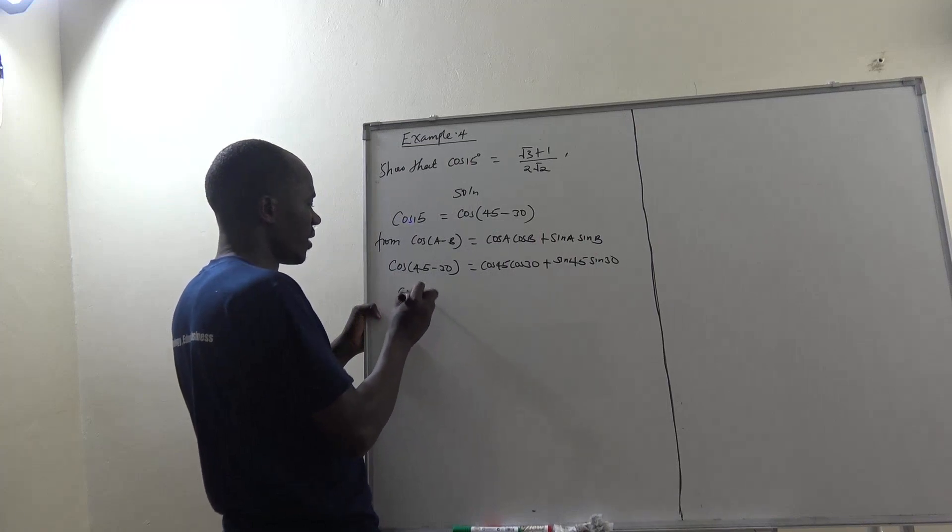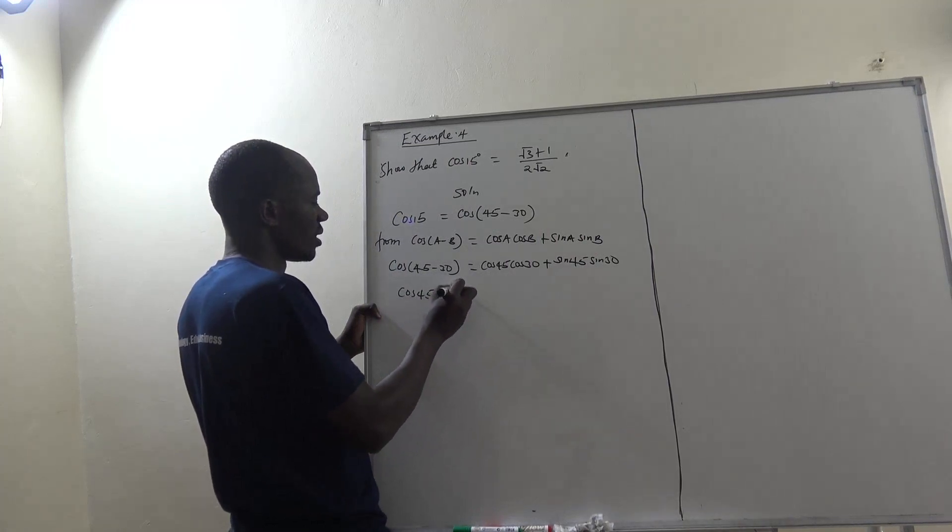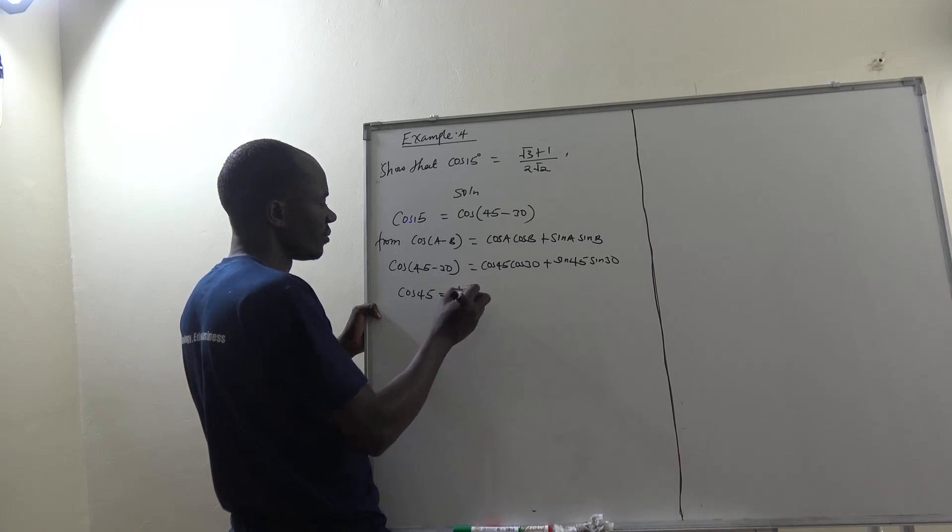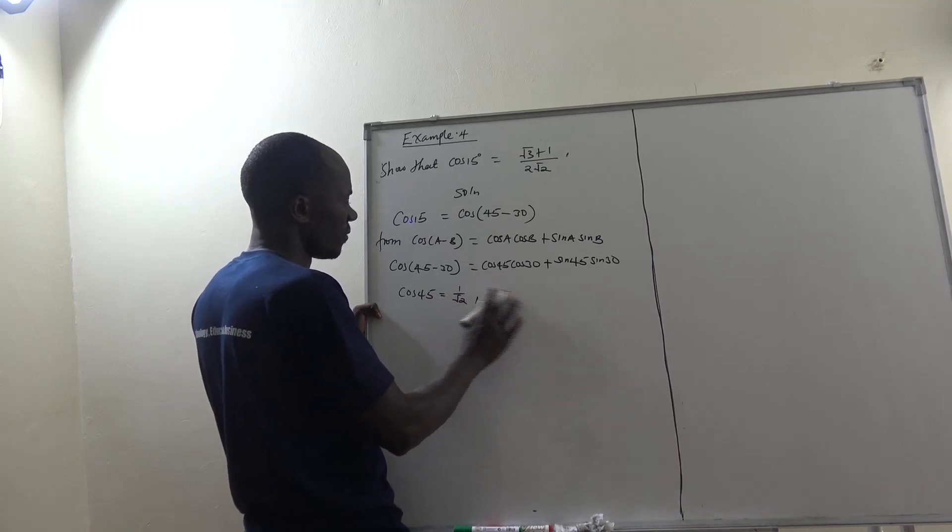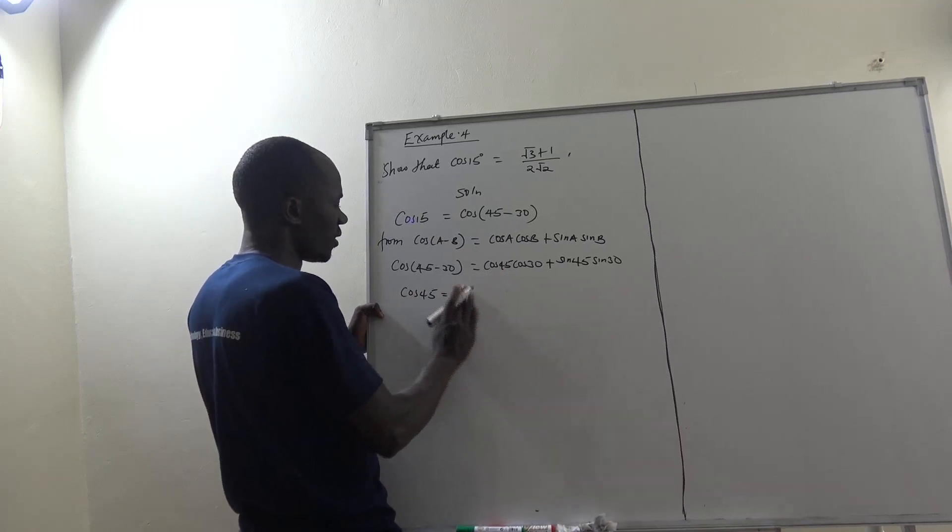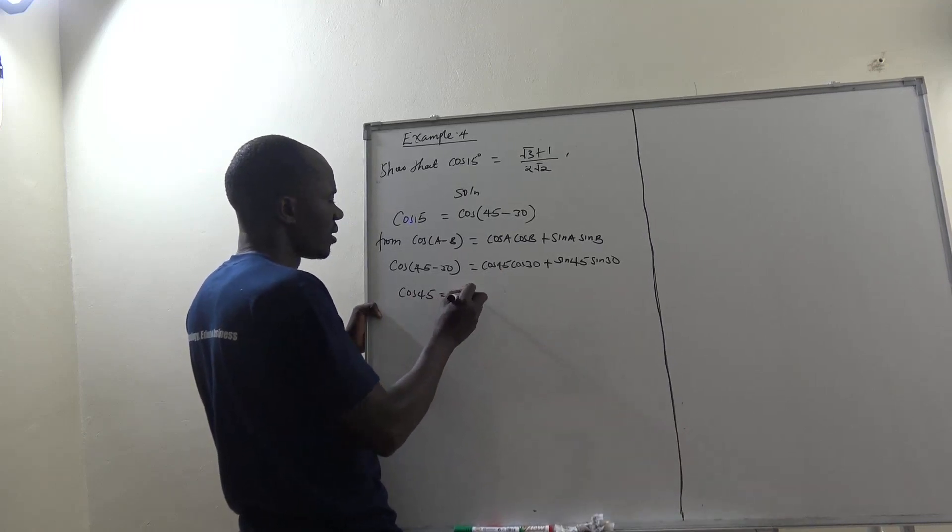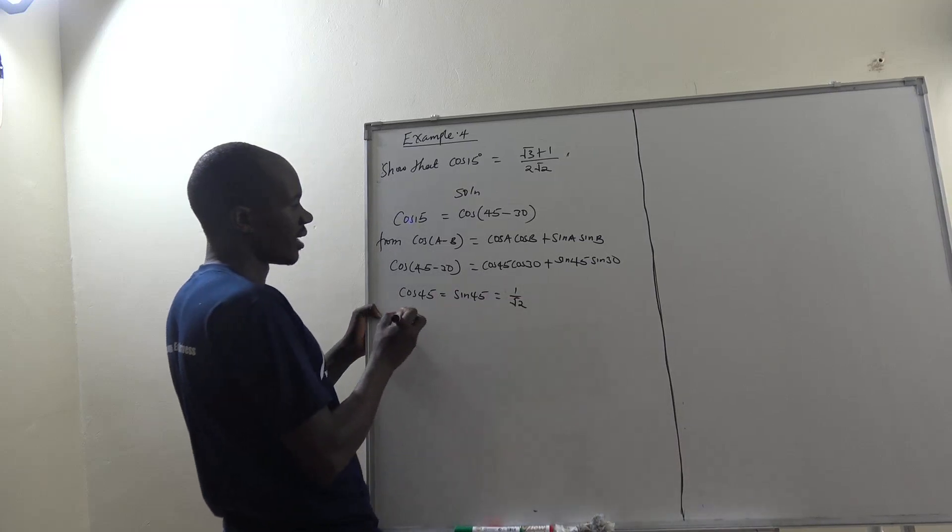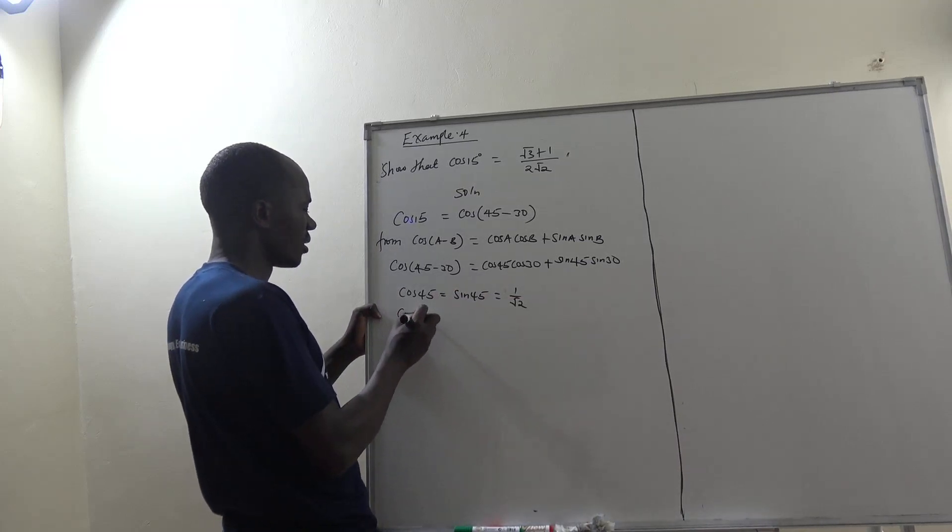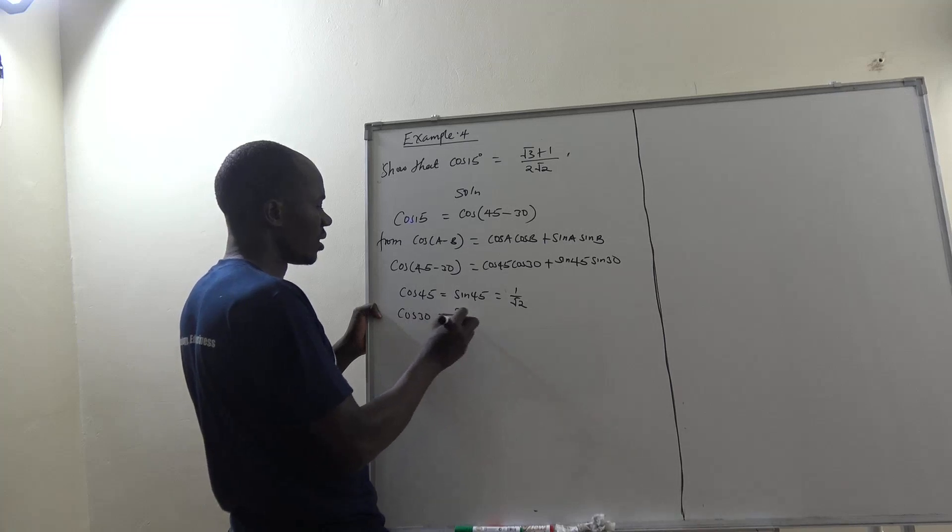But cos 45 is the same as sin 45, which is 1 over root 2. And again, cos of 30 is the same as root 3 over 2.